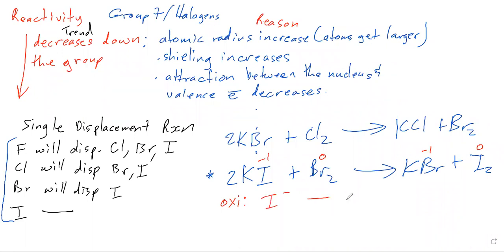I minus going to I2. Where should I put the electron? Over on the product side. And for the reduction equation, what should I write? Br2 plus 2 e minus to produce 2 Br minus. So what is the ionic equation? 2 I minus plus Br2 produces I2 plus 2 Br minus.